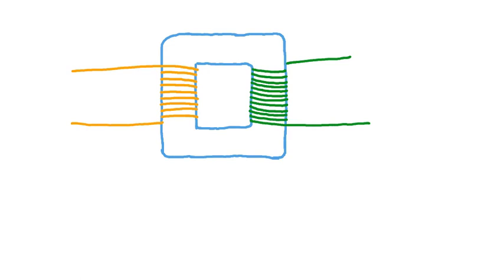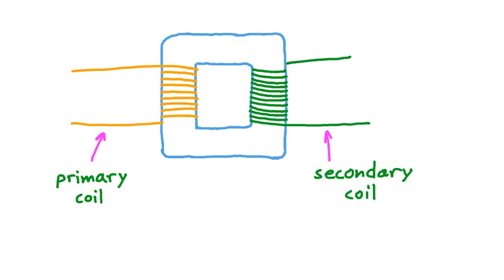There are three basic parts to it. First, there's a coil of wire known as the primary coil — this is the wire through which electricity is introduced to the transformer. Then, across from the primary coil is what's called the secondary coil, which will have voltage induced across it and therefore current induced in it. And then, connecting these two coils is what's called the core. The type of material the core is made out of has a significant effect on the performance of the transformer overall.